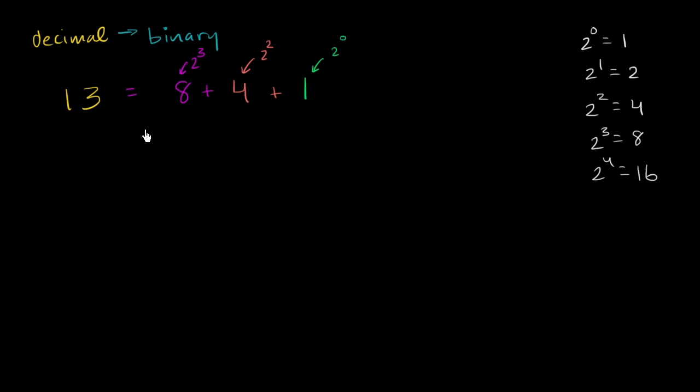Or I could write it like this: I have one eight, I have one four, and I have one one. So I could add these three together. 13 could be considered one eight plus one four plus one one.